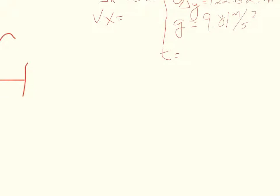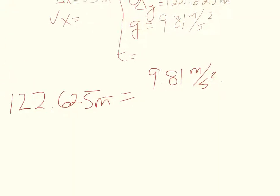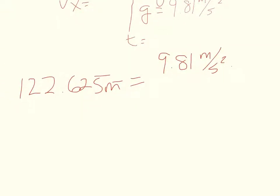So 122.625 meters = 9.81 m/s² times, let me just move a little bit over, times t², all of which is over 2. Now, we want to get this t by itself.